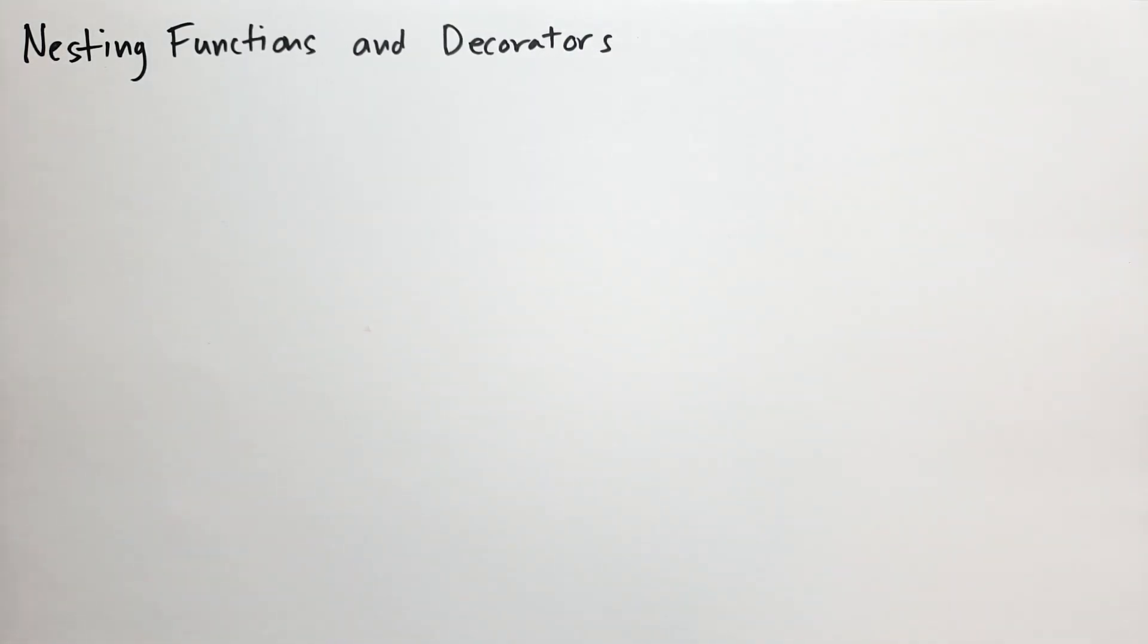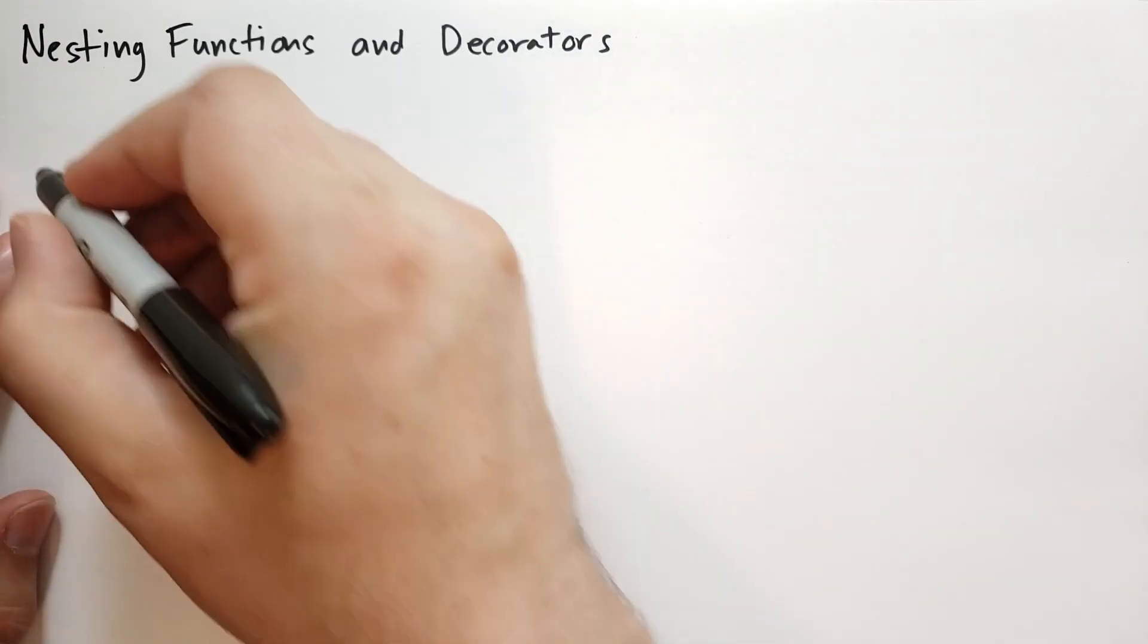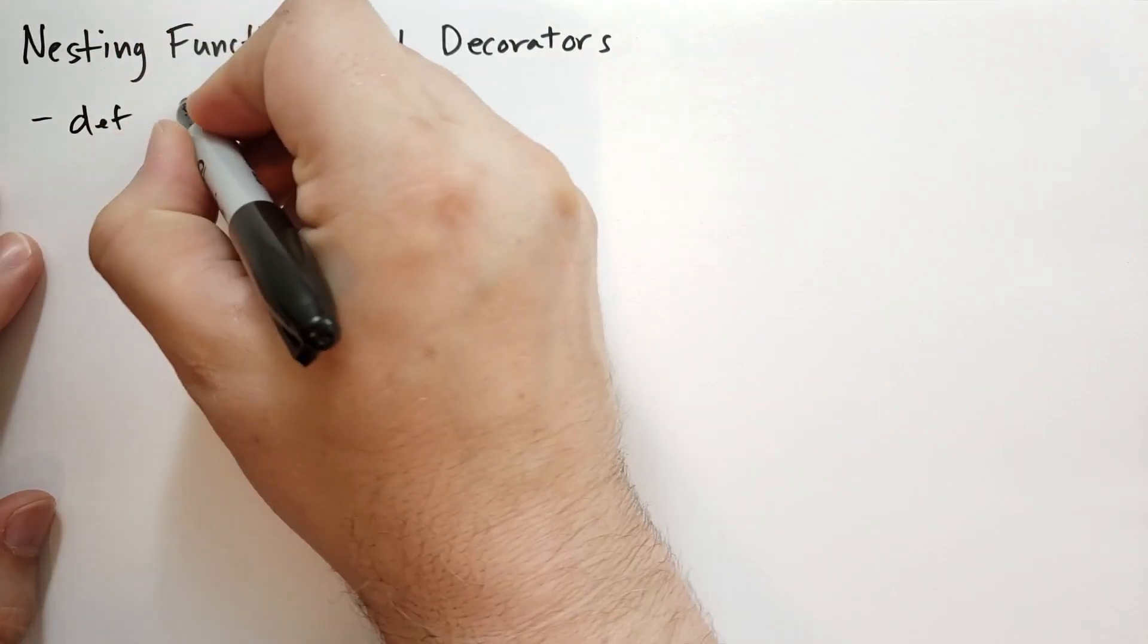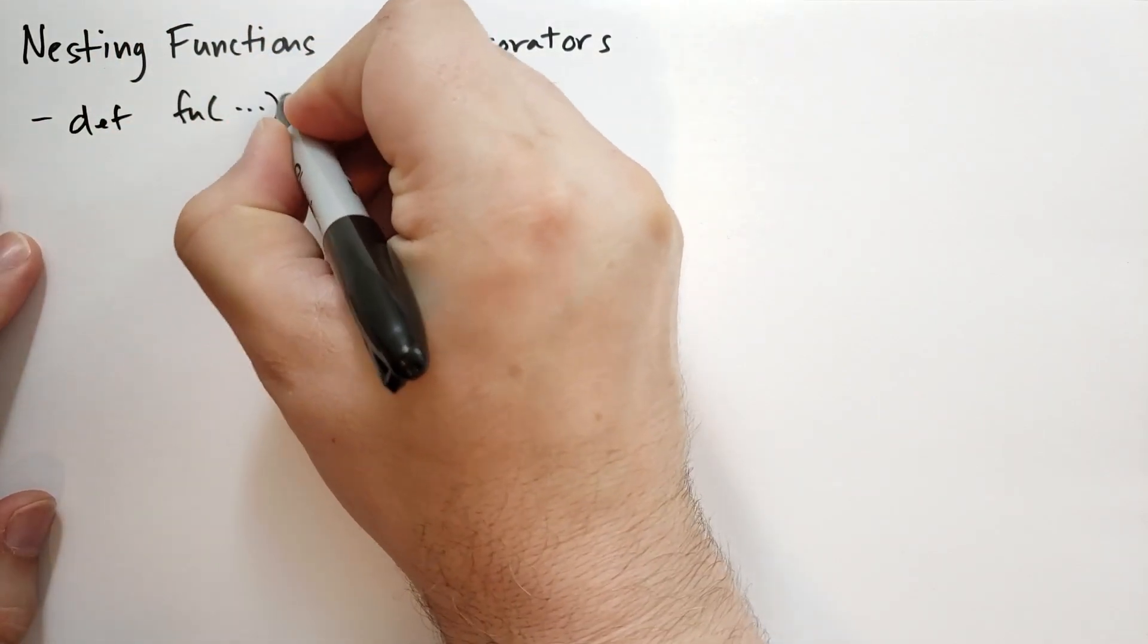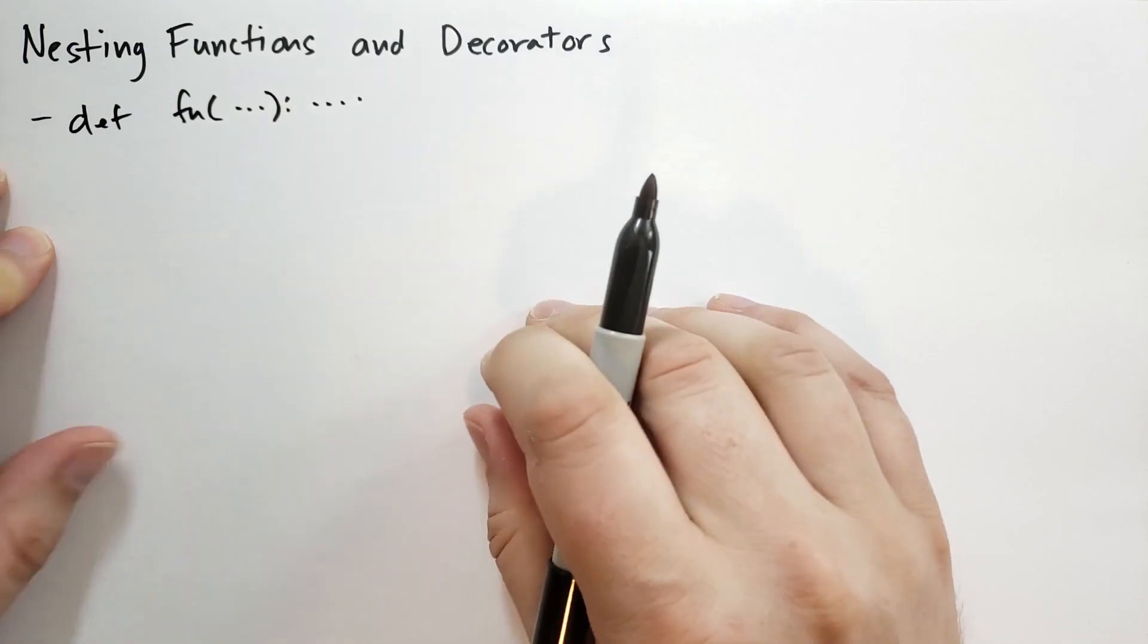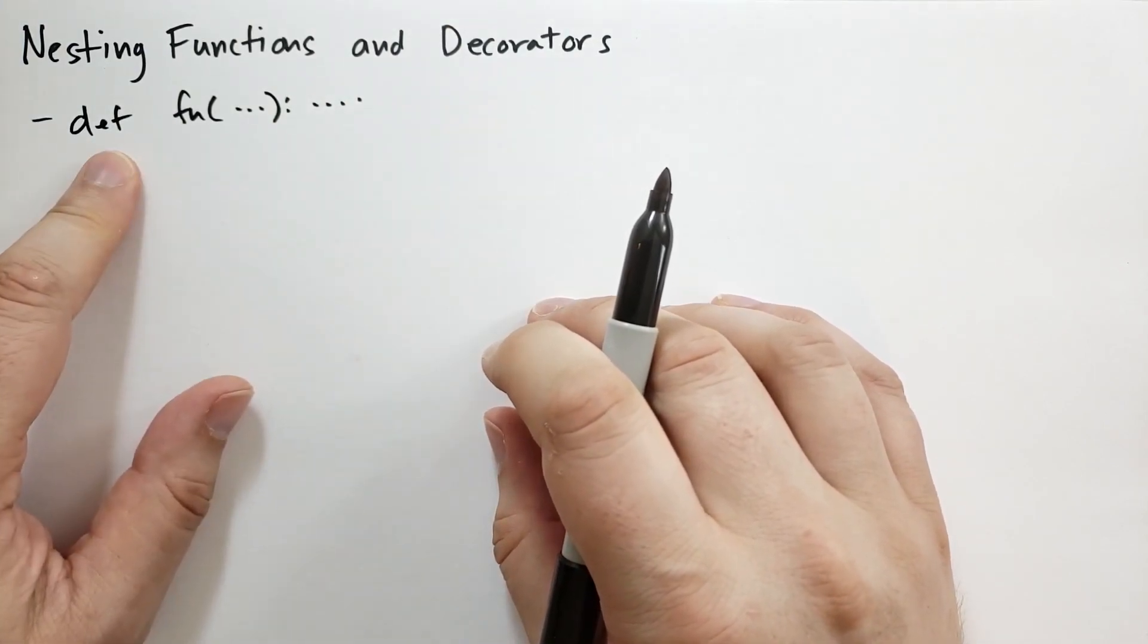So first, a review of functions. Remember that we didn't cover everything about Python functions. We left a lot of details out. We basically had, you have def, and you have the function name, and then you have a parameter list, and then you can specify the function body. That's basically how you define a function.